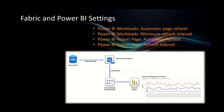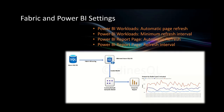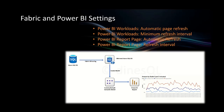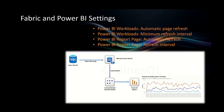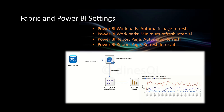The minimum refresh interval varies based on the capacity SKU. For F64 and above, you can configure it to one second. For F32 the minimum is five seconds, for F16 it's 30 seconds, and for F8 and below it's one minute or 60 seconds. Once these two capacity settings are configured, you can then configure automatic refresh at the Power BI report page level.